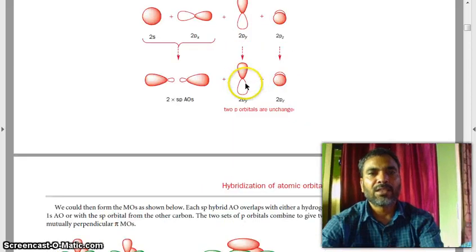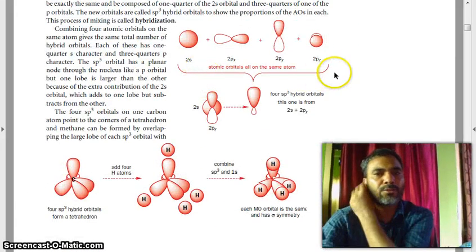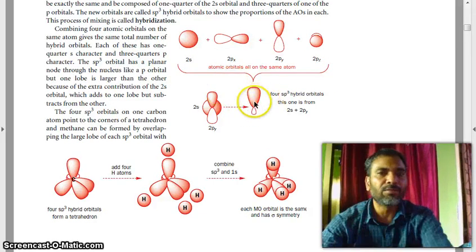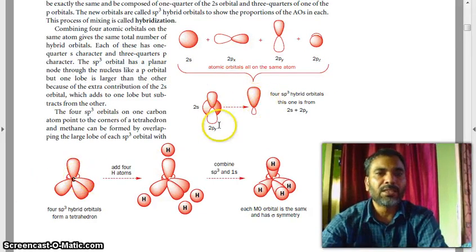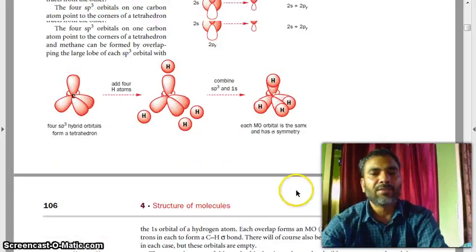So friends, just remember this concept: how 2S, 2Px, 2Py, 2Pz combine together forming four such type of SP3 orbitals combined. And after adding, then you will get methane in the same way.